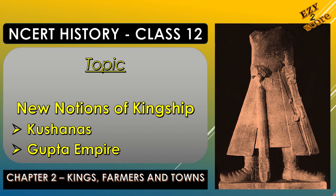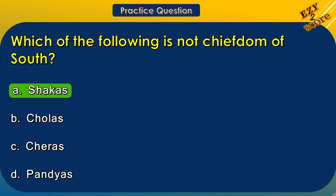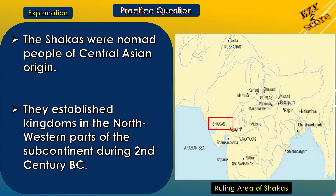Before starting MCQs of this topic, let's see the right answer of the practice question asked in the last episode. The question was: which of the following is not a chiefdom of South India? Options: A. Shakas, B. Cholas, C. Cheras, and D. Pandyas. The correct answer is option A, Shakas. The Shakas were nomadic people of Central Asian origin who established kingdoms in the northwestern part of the subcontinent during the 2nd century BC. You can see the ruling area of Shaka rulers in the northwestern part of the Indian subcontinent.